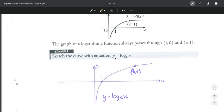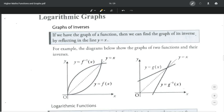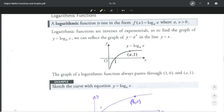If sketching y equals log base 2 of x, it would look almost identical except the point would be (2,1). Log base 10 of x goes through (10,1). In general, log base a of x goes through (1,0) and (a,1). That's logarithmic graphs.